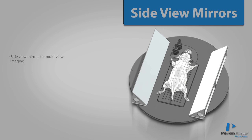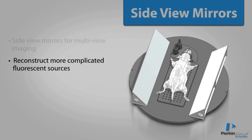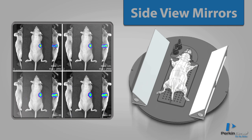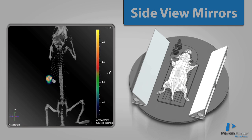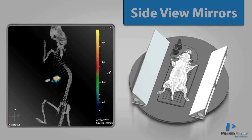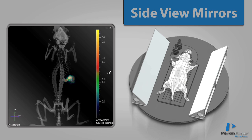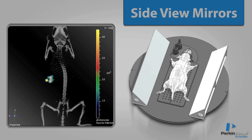Side-view mirrors for multi-view imaging are available with all of Perkin Elmer's IVIS systems. The mirrors help with reconstructing more complicated fluorescent sources, as with this example where two fluorescent sources are located directly on top of one another. With a single view, only one source can be imaged and reconstructed, but with the help of mirrors, the IVIS system is able to discern and localize both sources in the reconstruction.